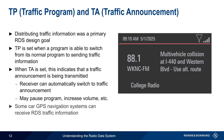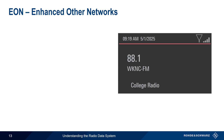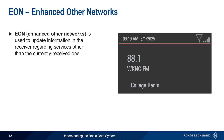Note that some car GPS navigation systems can receive and process traffic information received over RDS. Traffic information is also one of the main applications of the EON, or Enhanced Other Networks parameter.